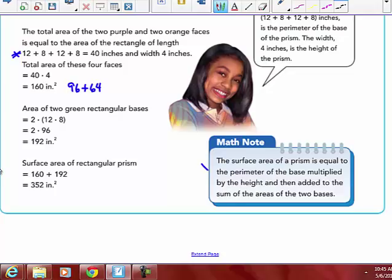This is the shortened formula that they used here, the perimeter of the base 12 plus 8 plus 12 plus 8 multiplied by the height times 4, and then added it to the sum of the area of the other two bases, those two green parts. You can do the shortened formula. However, New York State on the state exam next year will give you that 2LW, 2LH, 2WH formula, doing it as six rectangles or three groups of two rectangles.